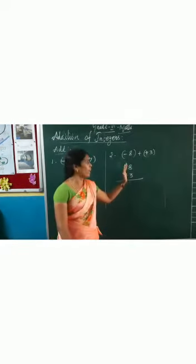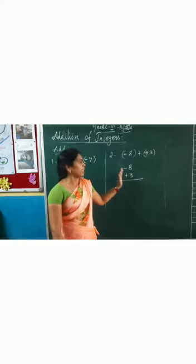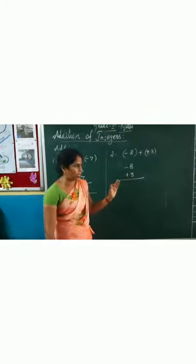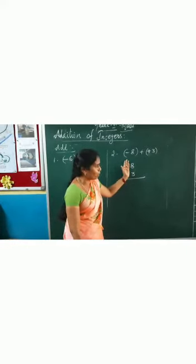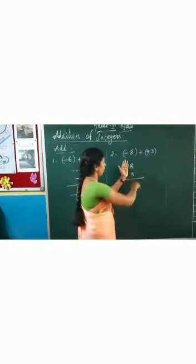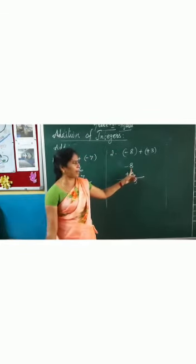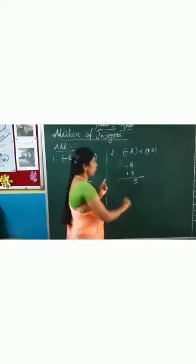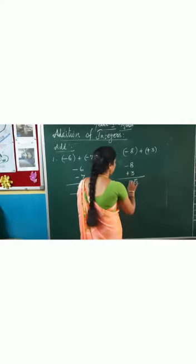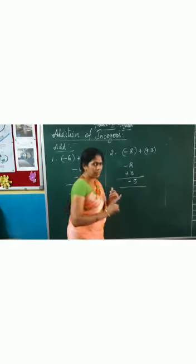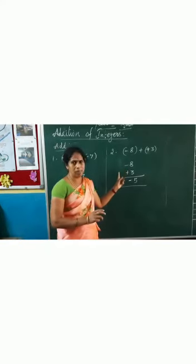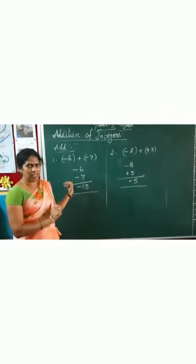While adding integers, if different symbols are there, you have to do subtraction. Close the symbols and do the subtraction: 8 minus 3 equals 5. Then, which one is the greater number? 8. So the greater number's symbol is minus, so you choose the minus symbol. Before adding integers, look at the symbol — whether both numbers have the same symbol.